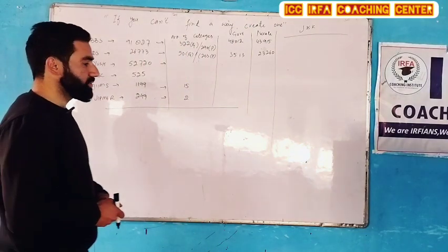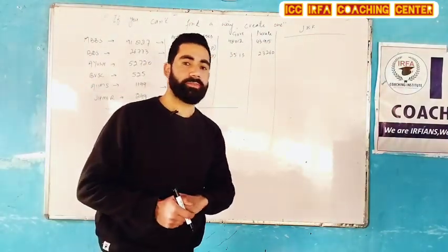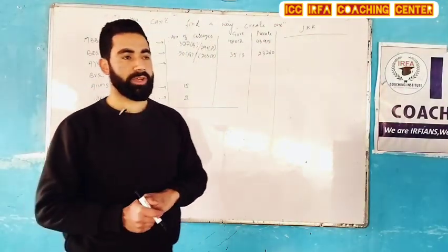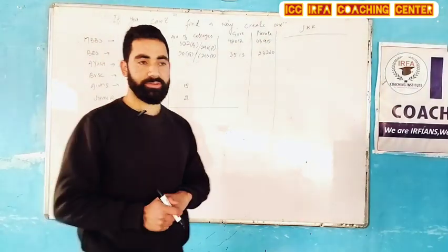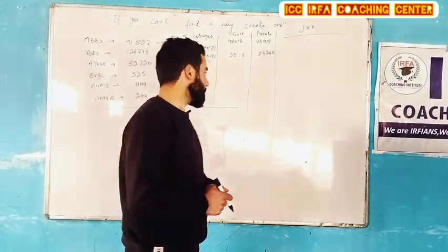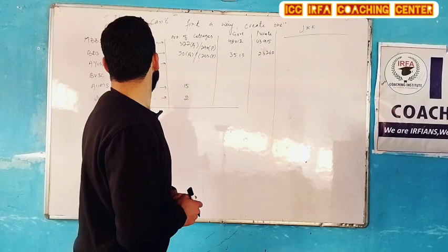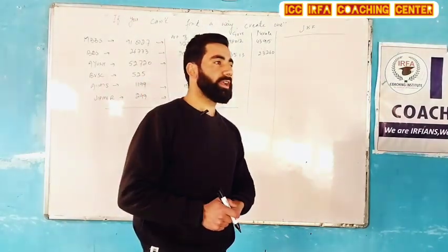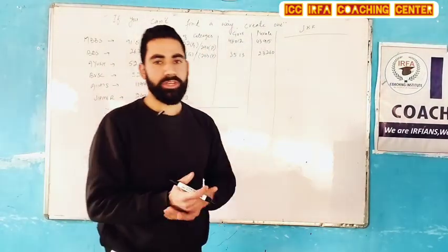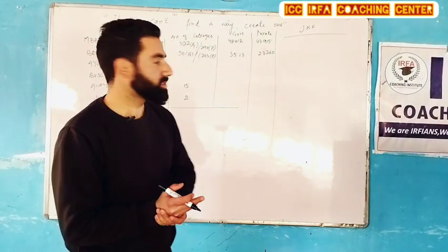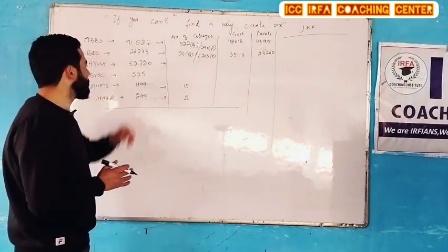The next category is AYUSH, which covers various terms: Ayurveda, Yoga, Yunani, Siddha, and Homeopathy. This combination has 52,720 seats.